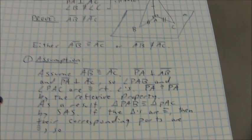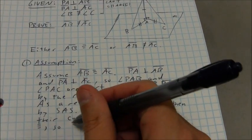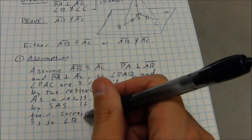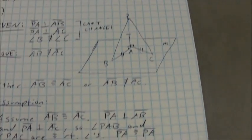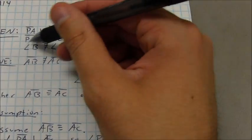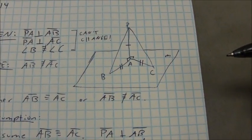So as a result, we know that angle B is congruent to angle C. Well, that's a huge problem because I was told in the given up here that angle B was not congruent to angle C.